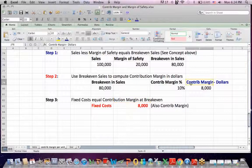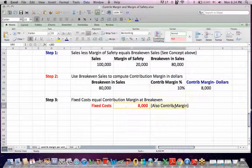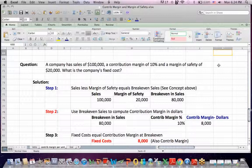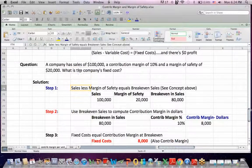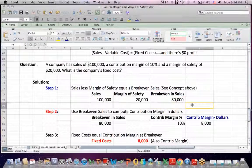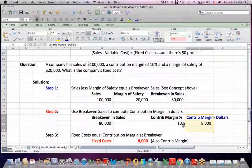So at break even, contribution margin equals fixed cost. So if my contribution margin is $8,000, I know that my fixed cost is also $8,000. So what I just figured out was, if I go back up to the question, I figured out the company's fixed cost in dollars. I figured out break even sales.